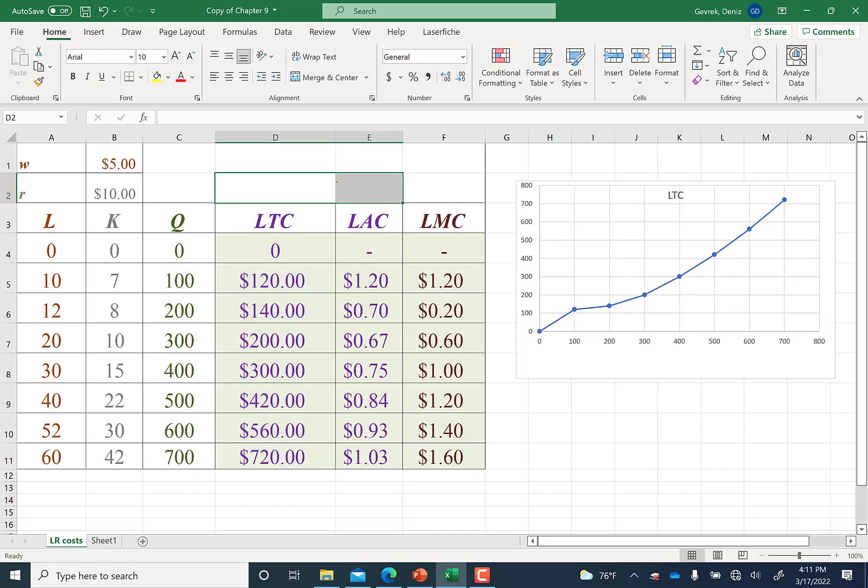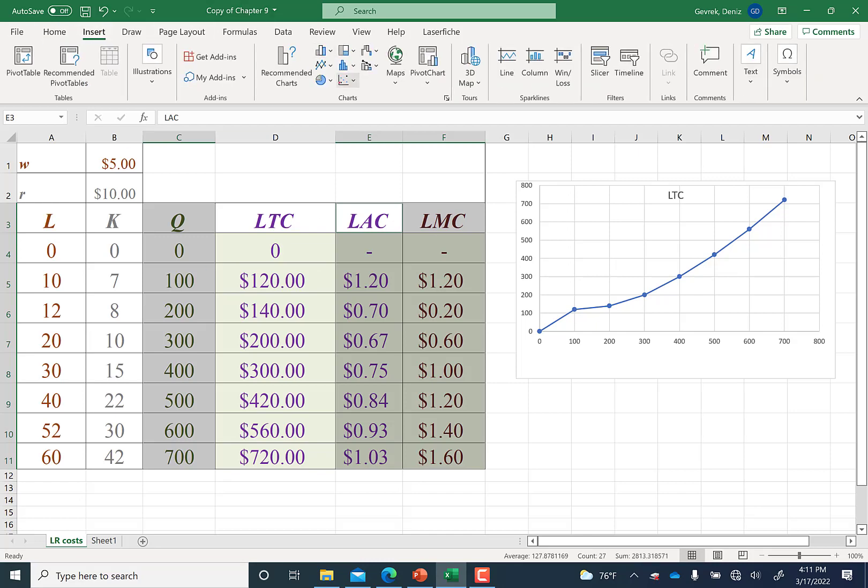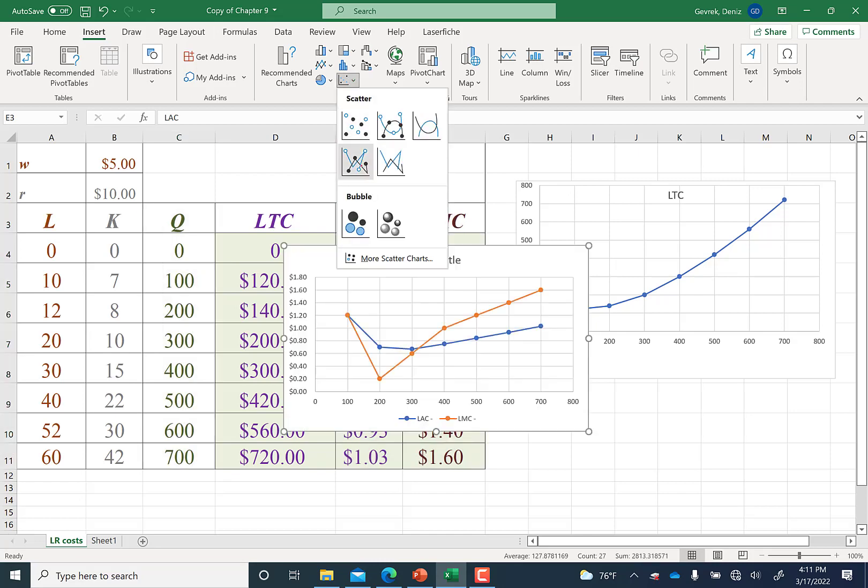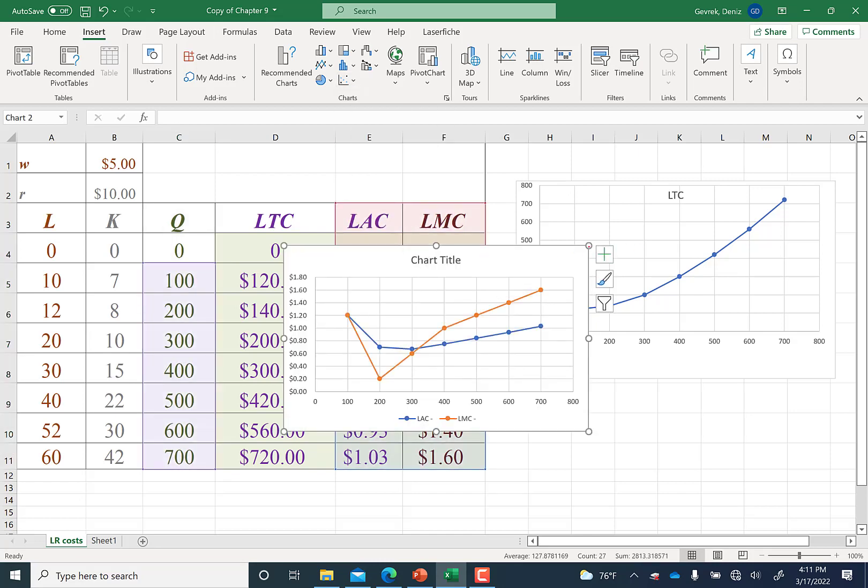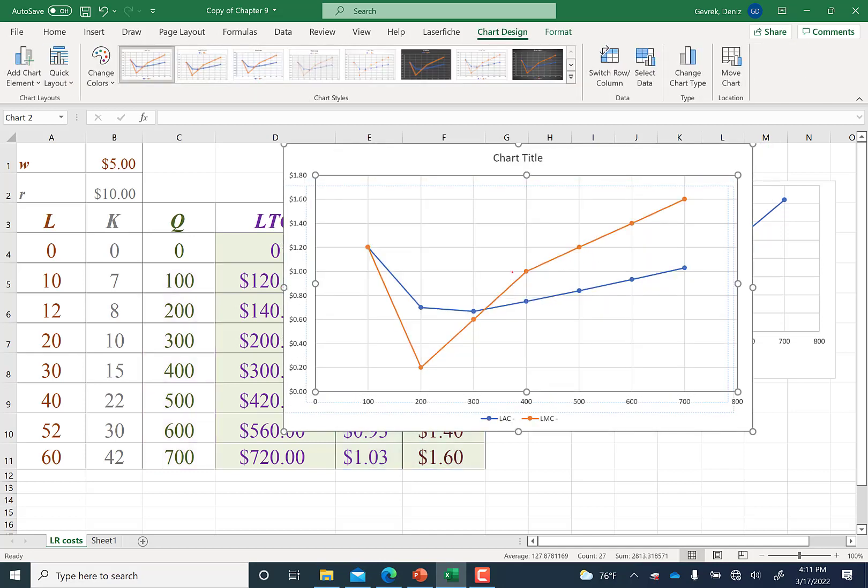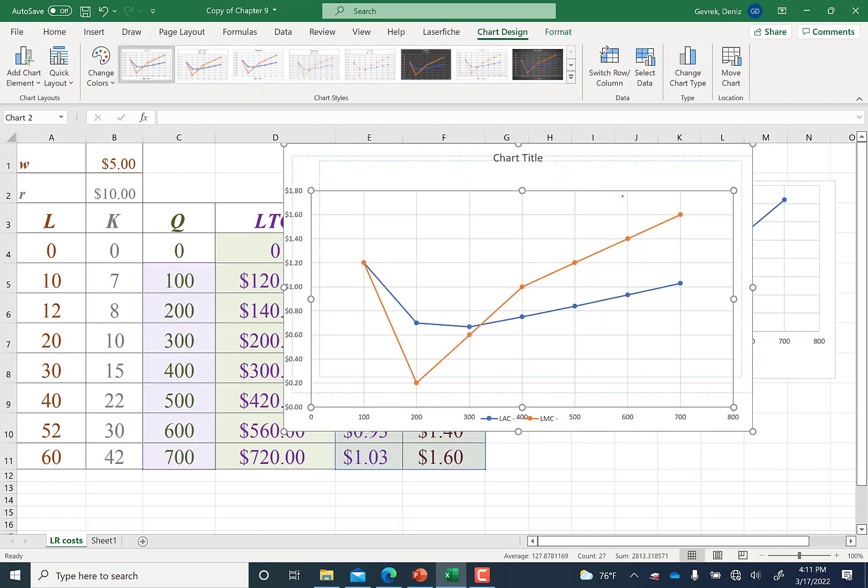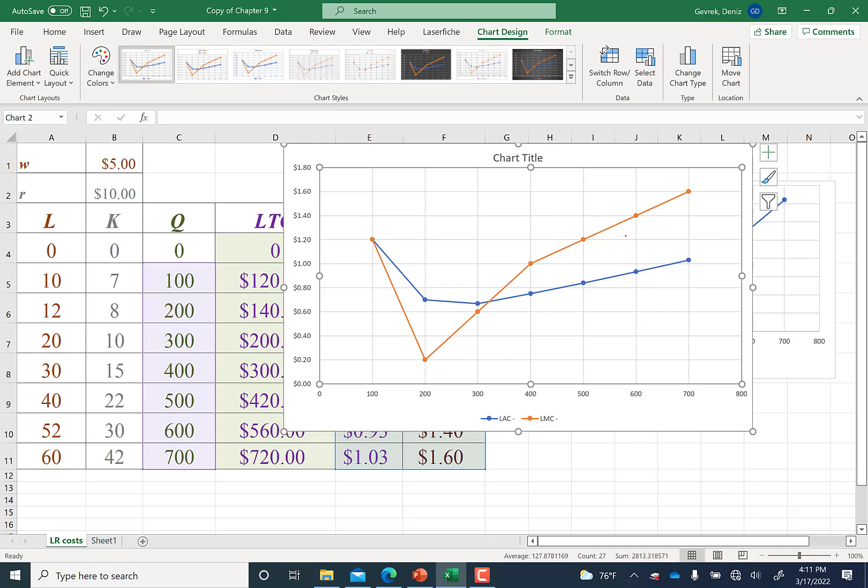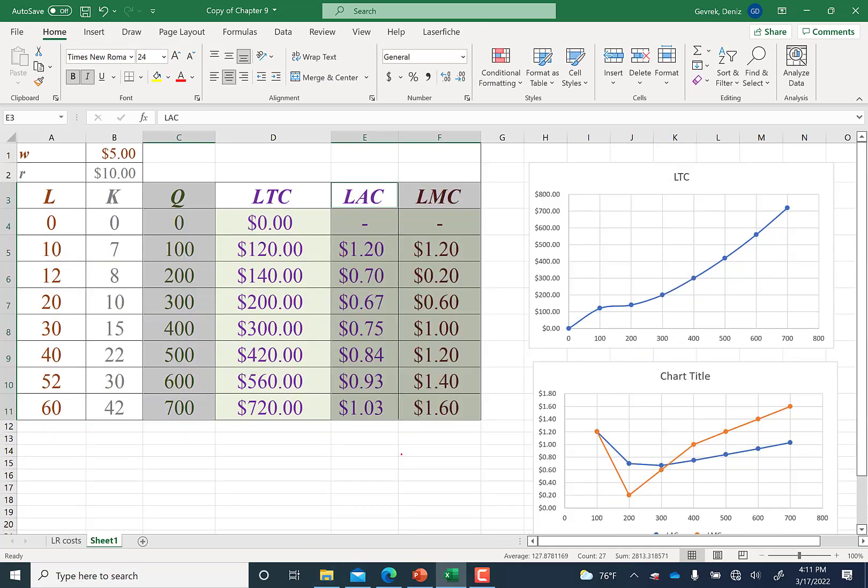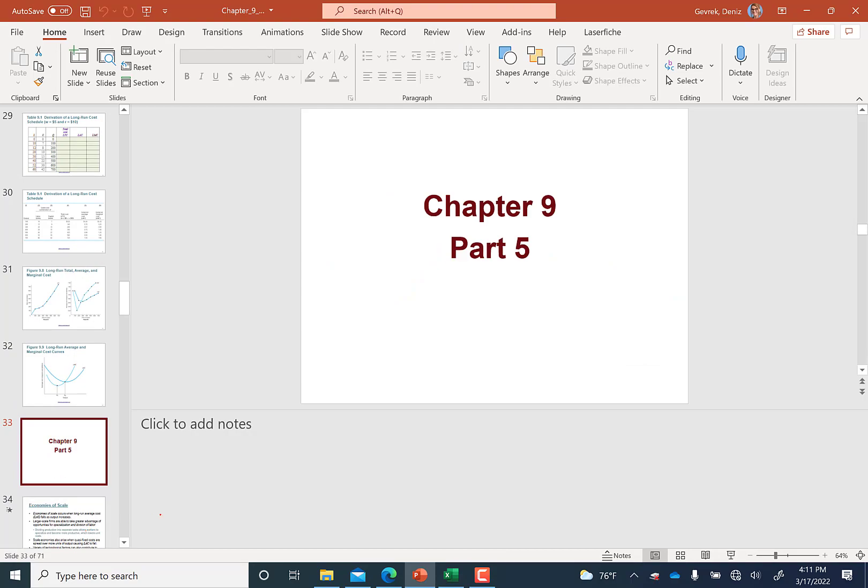Let's also get the marginal and average cost curve. I'm going to grab quantity and LAC and LMC. I am hitting Control—if you have a Mac computer you can also hit Command and select. Then we're going to Insert, charts, grab the scatter. Check this out, we got it. Here we are: you have marginal cost curve in orange, average cost curve, and there's the graph. That's it. This is part four. I'll see you on part five in a second.